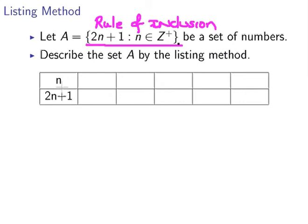And that's the alternative way of writing out a set, but we are asked to describe the set using the listing method. So what we're going to do is, for each element of n, it says here that n is an element of the positive integer set of numbers.